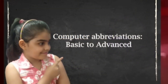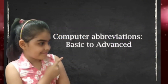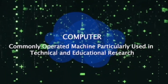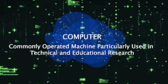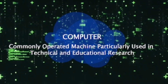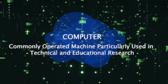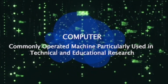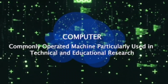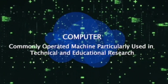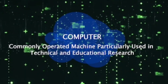Computer abbreviations basic to advanced. The full form of COMPUTER is: C — Commonly, O — Operated, M — Machine, P — Particularly, U — Used, T — Technical, E — Educational, R — Research.